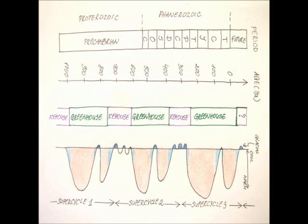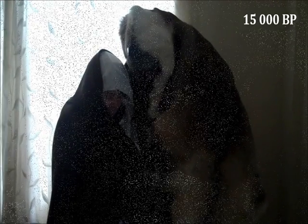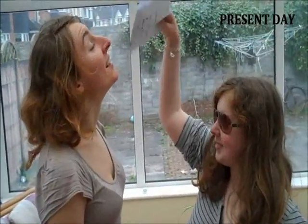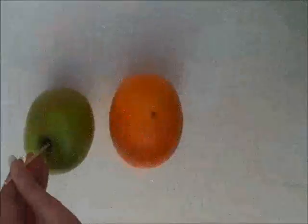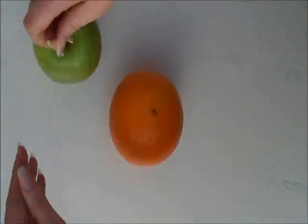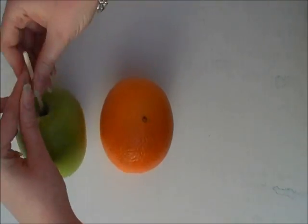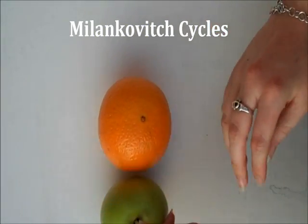Major global glaciations are a common phenomena throughout Earth's history. They are known to occur in the past as super cycles, where stadial is replaced by milder interstadial. The cool ice house conditions alternate with the warmer greenhouse periods. Major external drivers that might initiate such dramatic climate changes are the Milankovitch cycles.